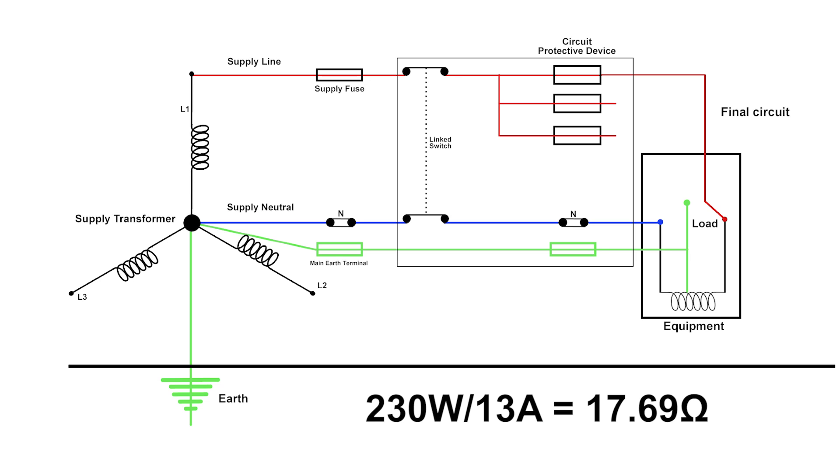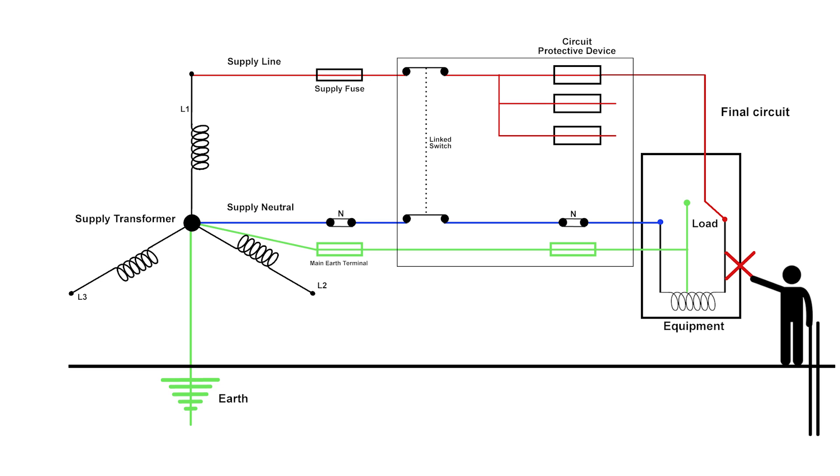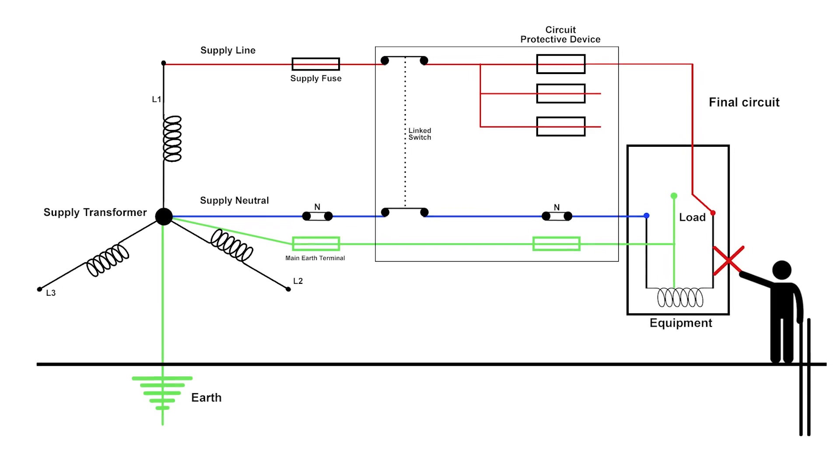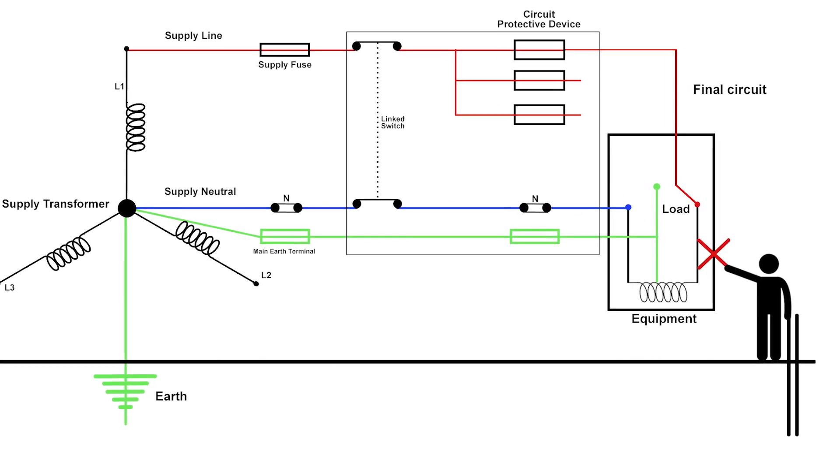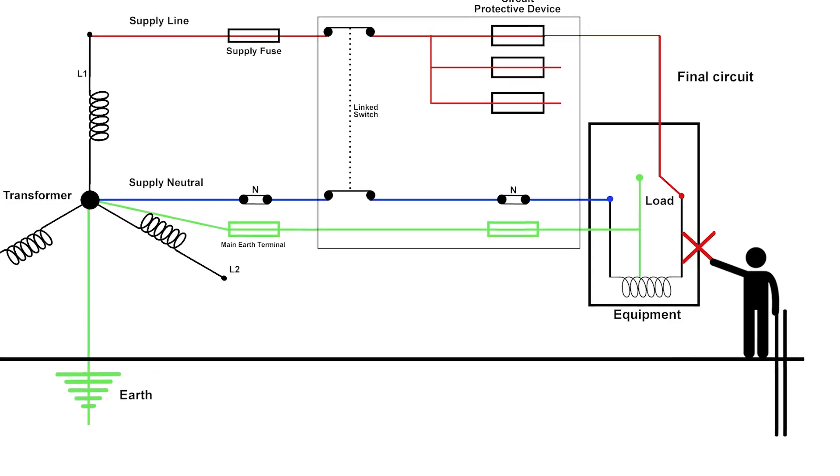Circuit breakers are a different issue we don't want to talk too much about those. But let's just assume there's a fault on our piece of equipment here, and the metal case of the equipment cuts through the line conductor of the supply cable. If the case of our piece of equipment cuts through the line conductor, fairly obviously the case is going to become live.